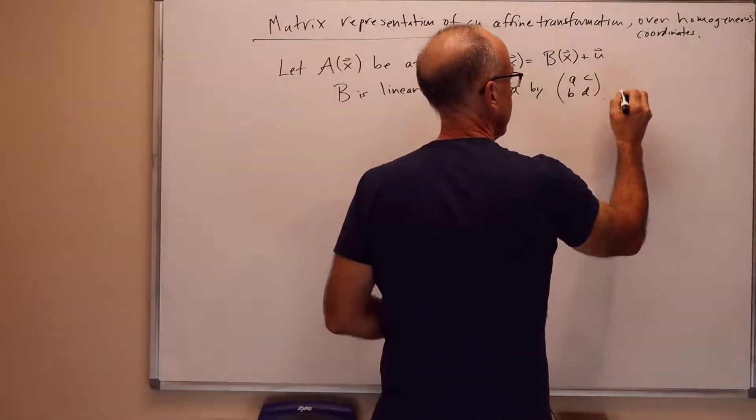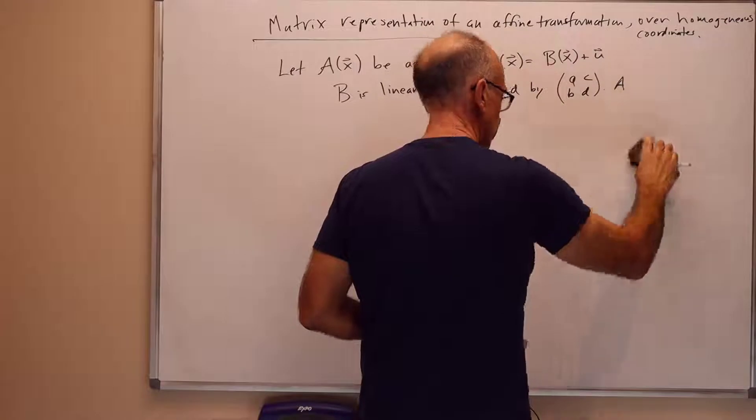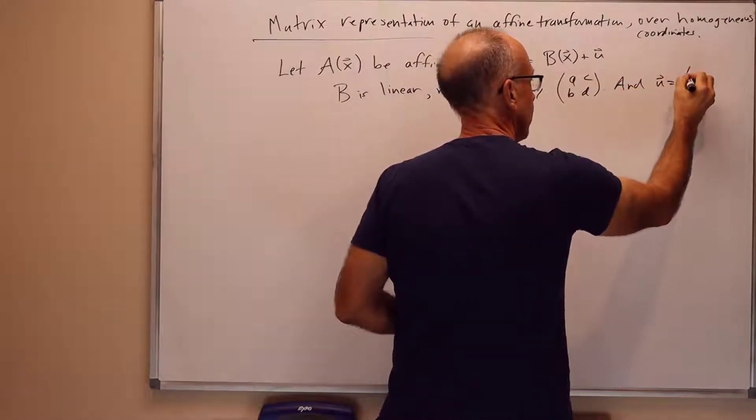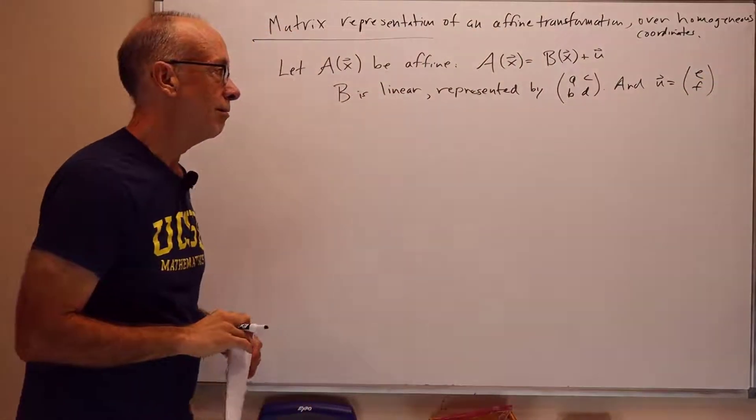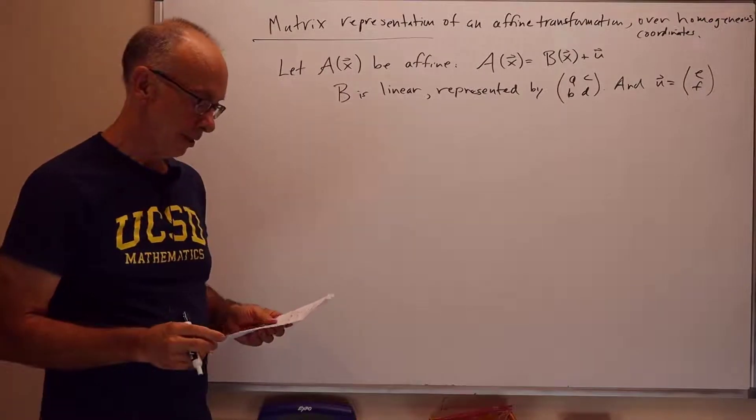And then, u is a point in R2, and so it's a column vector, which I'll just have components E and F. E is the x component, and F is the y component of the point u, and that's the translation part of the affine transformation.